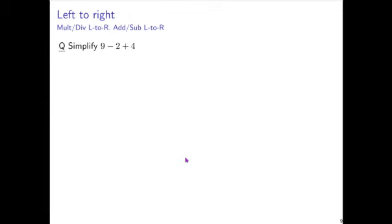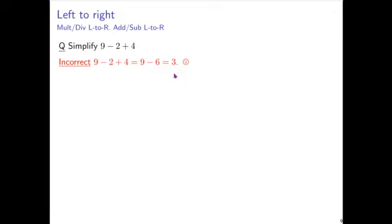So what does it mean that additions and subtractions should be done from left to right? For example, simplify 9 minus 2 plus 4. It is incorrect to focus on the 2 plus 4 first, simplify that to 6, and then have 9 minus 6, which would become 3. This is incorrect — this is focusing on addition before subtraction. What's correct here is we need to do the subtraction before the addition because the subtraction appears first when you scan from left to right.